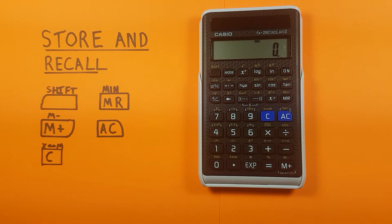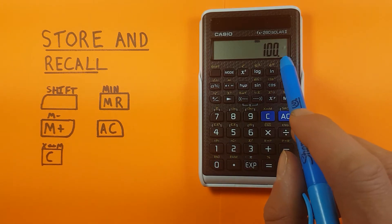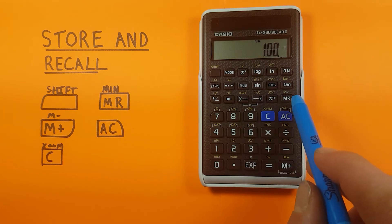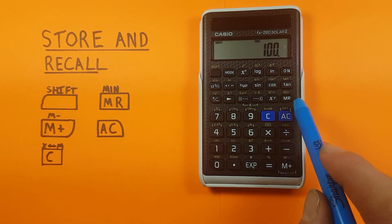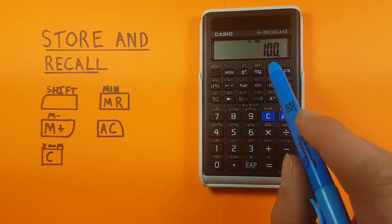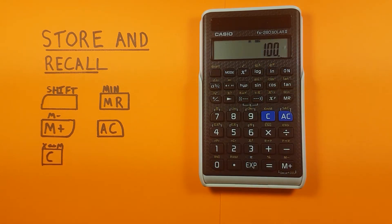To get started, we want to place something into our memory slot. We'll put, let's say, 100 on the screen, and then to put that in our memory, we use the MIN function above the MR, which stands for memory in. So we go shift MR, and we see this M up here on our screen, which tells us there's something in the memory.